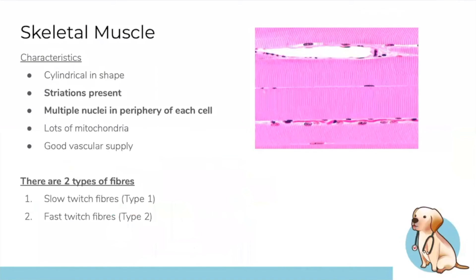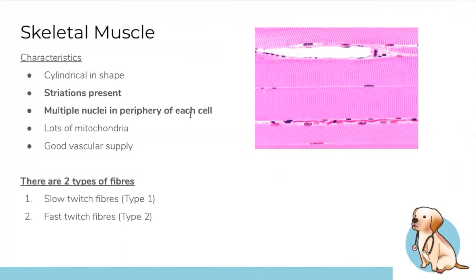There are three types of muscle: skeletal, cardiac, and smooth. Skeletal muscle is cylindrical with multiple nuclei along the periphery, has striations (light and dark bands), lots of mitochondria, and a rich vascular supply. It's voluntary and moves the body. There are two fiber types: slow twitch fibers (used constantly, like back muscles — great resistance to fatigue, rich in mitochondria) and fast twitch fibers (used for peak output).